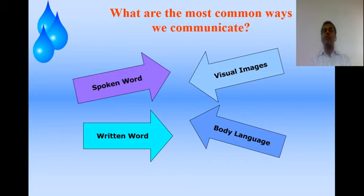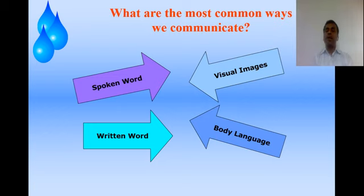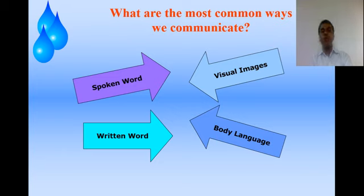Mostly, communication is done using words spoken from our mouth. Sometimes we use images for the purpose of communication — for example, whenever we travel, we see a number of images beside the roads. Those images carry messages and from that, communication is there. Moving to the next: written word. Sometimes spoken form and image form of communication are not enough, so we need to write letters in business communication, or write paragraphs. That becomes written form of communication.